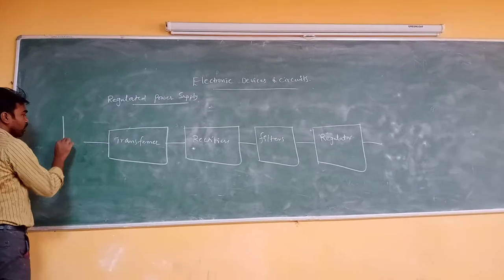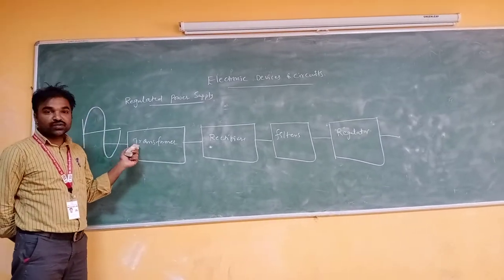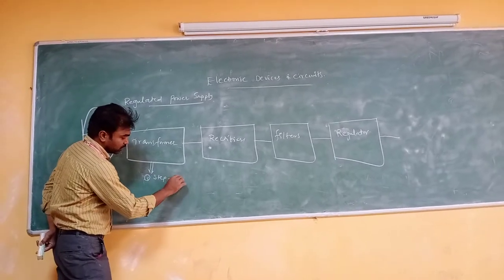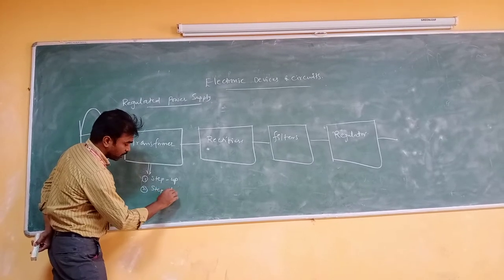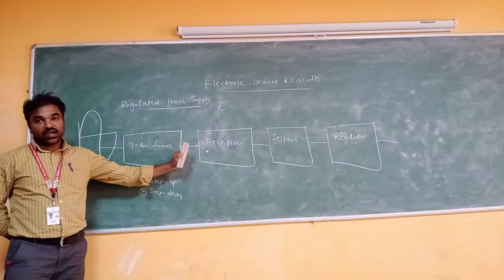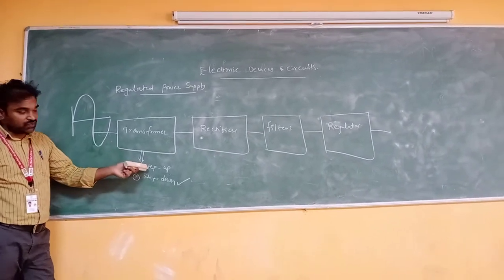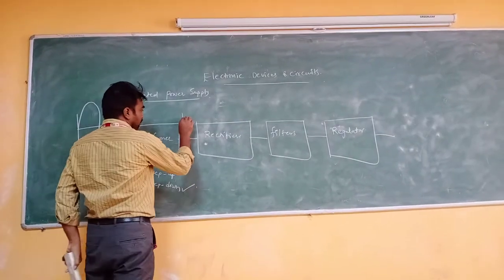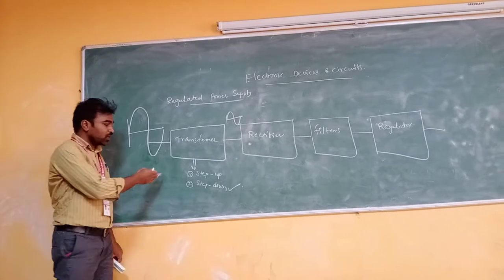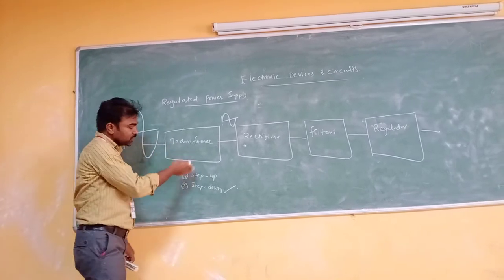Initially I am applying an AC signal of 230 volts at 50 Hz frequency. The first step uses a transformer. There are two types: step-up transformer and step-down transformer. Here I am using a step-down transformer to convert high voltage to low voltage. The turns ratio formula is N1/N2 = V1/V2 — depending upon your requirement, use that formula to determine the voltage level.